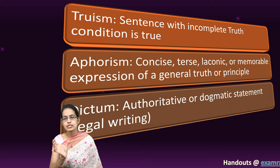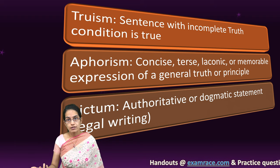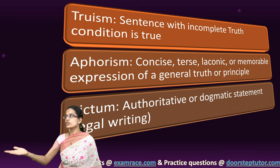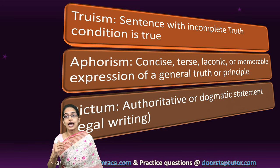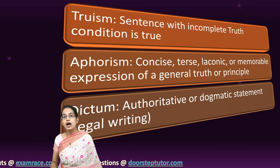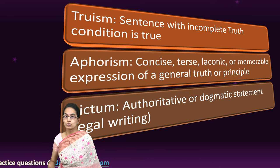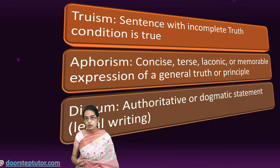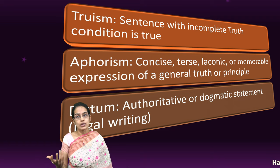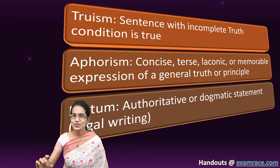That is what truism is. I have another good example: no one was there when life first appeared on earth. This is a truism because it is an incomplete truth — we do not know whether there was someone or there was no one, and how do we know about how life originated. So this is a truism.